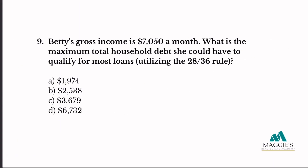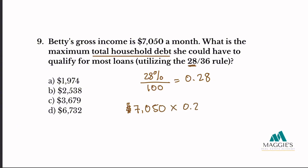Number nine: Betty's gross income is $7,050 a month. What is the maximum total household debt she could have to qualify for most loans using the 28/36 rule? Since it says total household debt, I use 28%: $7,050 × 0.28 = $1,974. My answer is A.